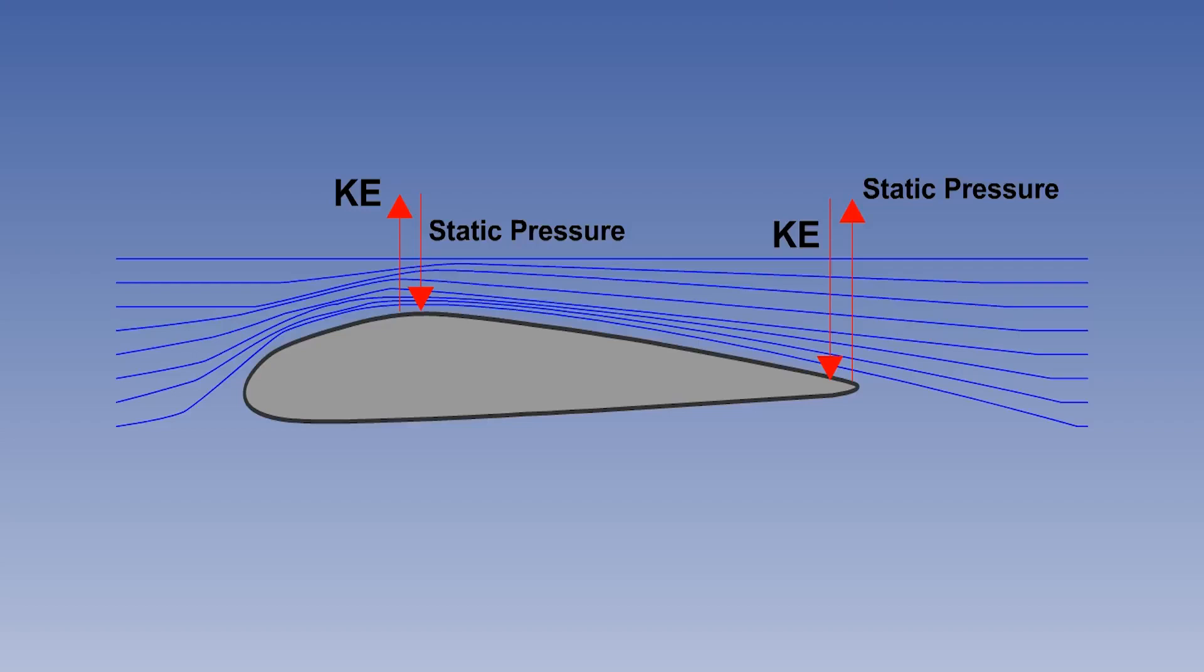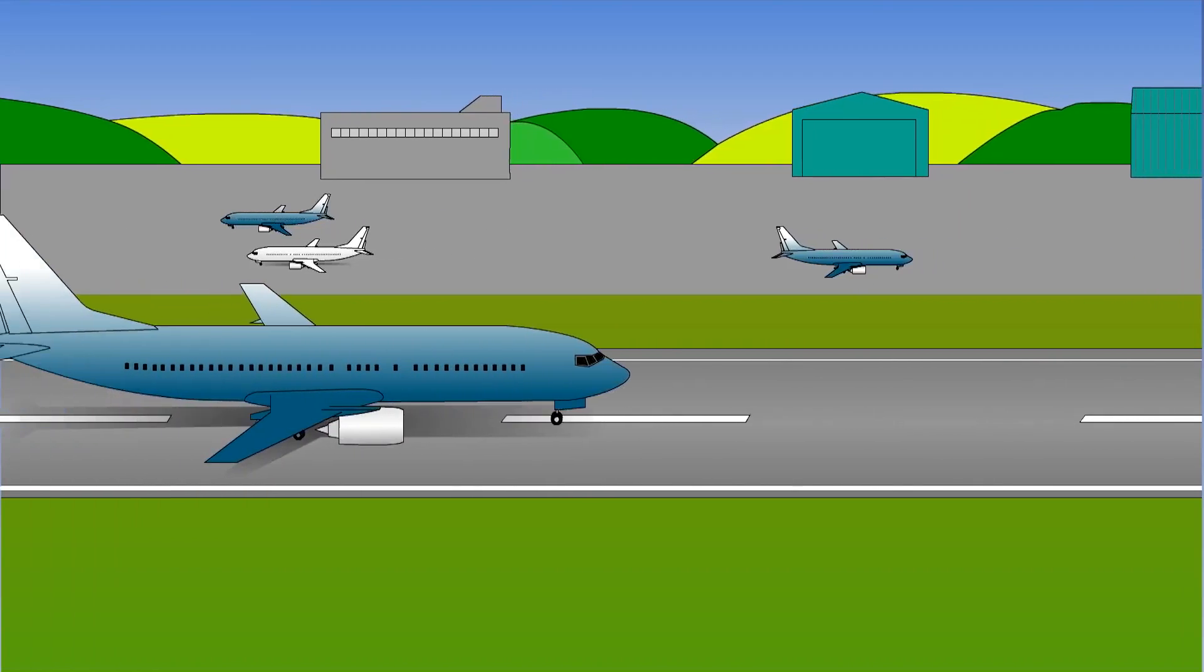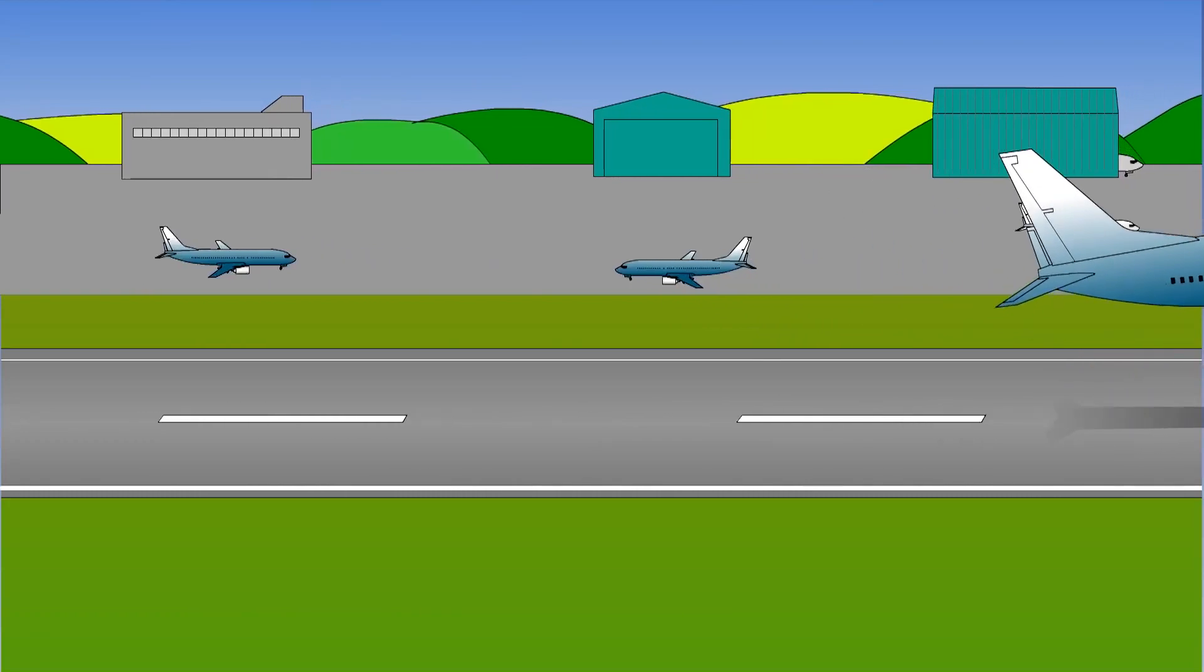Conversely, if air decelerates, the kinetic energy will decrease, and the static pressure will increase. Additionally, it should be remembered that these pressure changes will not affect air density at speeds below Mach 0.4. By using these effects, an aerofoil can generate the aerodynamic forces required for flight.